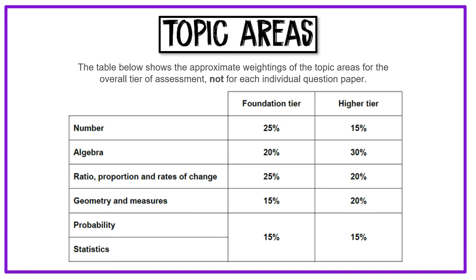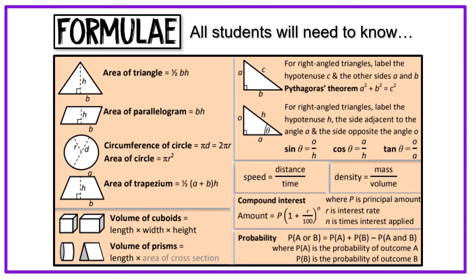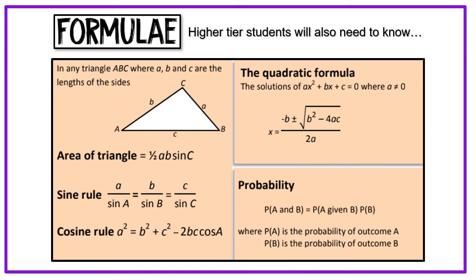The table shows the approximate weightings of the topic areas. For example, 20% of the foundation content is algebra, yet 30% of the higher tier content is algebra. All students will need to know certain formulae — it is important to memorise these before going into the exam. Higher tier students also need to memorise the additional formulae shown.